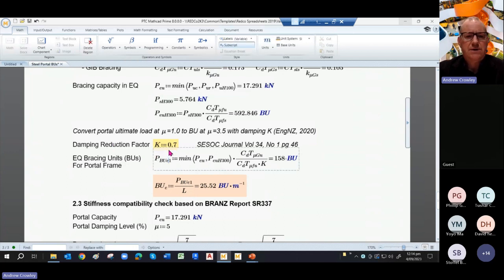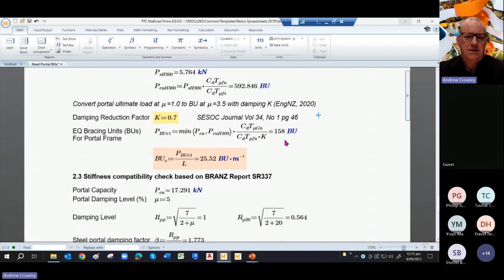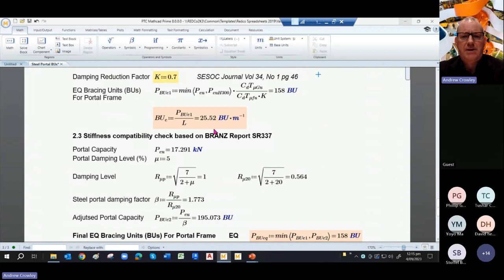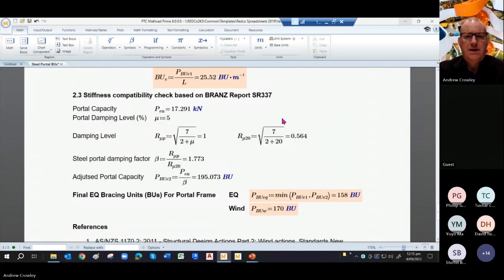Use this with caution and the SESOC journal volume 34 actually gives you a value of 0.7. However, there are limitations on when that can be applied. If in doubt, just leave it as a 1. But obviously that's going to reduce your BUs from that. And again, we pop out with a BU factor as BUs per metre.